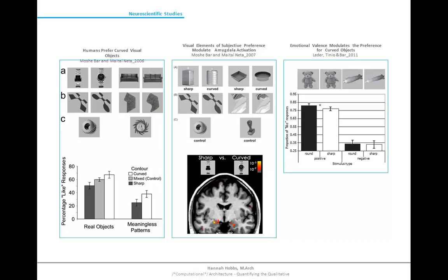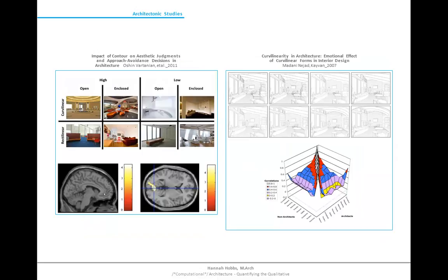Bar continued the work with other colleagues to establish if positive or negative valence objects had an effect. The only noticeable difference was found in positive valence objects — for example, a round cake was preferred over a square one — as opposed to a sharp-contoured missile, which was found to be in similar preference to a curved-contoured missile. These neuroscientific studies gave precedent for the need to study contours within architecture.